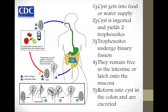Initially, the cyst contaminates food, water, or gets on the hands. The cyst is then ingested, enters the intestines, and yields two trophozoites that then undergo binary fission to replicate. These trophozoites can then remain free in the intestine or latch onto the mucosa, which increases permeability of the brush border and leads to flattening of the villi, inhibition of disaccharidase activity, and overgrowth of enteric bacterial flora.